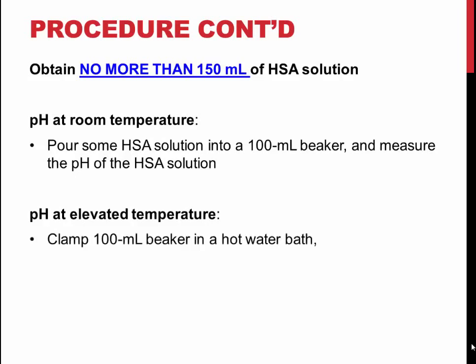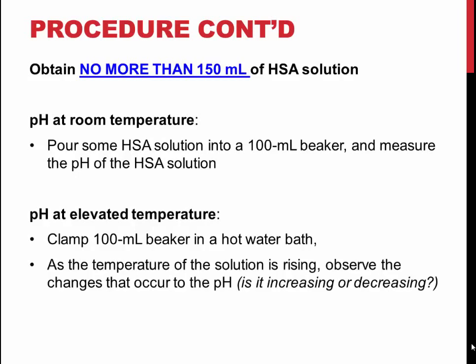Next, take the same sample and clamp it in the hot water bath you set up at the beginning of the lab. Unplug the temperature probe from the pH meter and use a thermometer to take the temperature readings instead. Observe the pH as the acid solution heats up. When the temperature stops increasing, which should be at the temperature of around 40 degrees Celsius, record the pH and temperature of the solution.